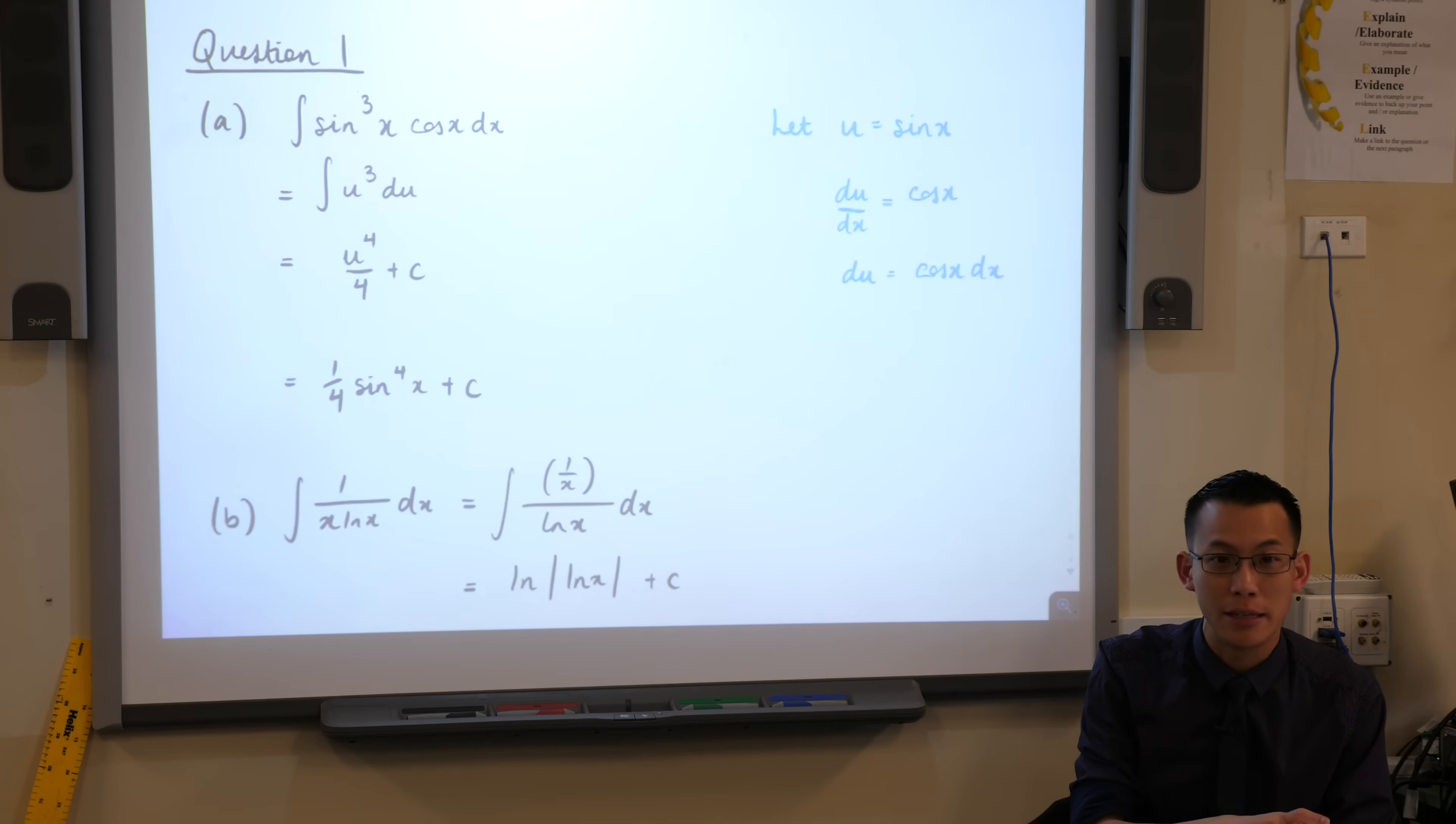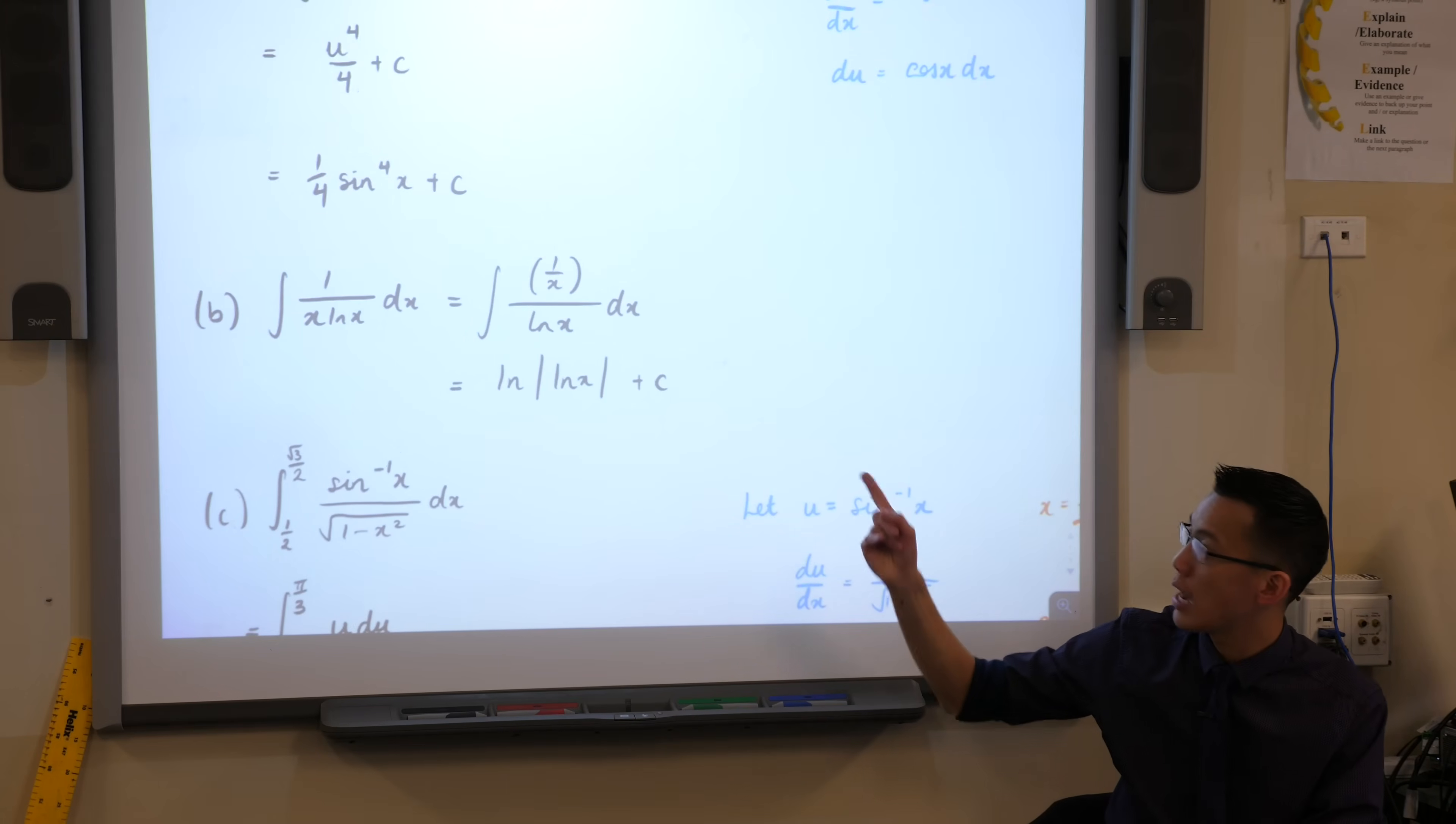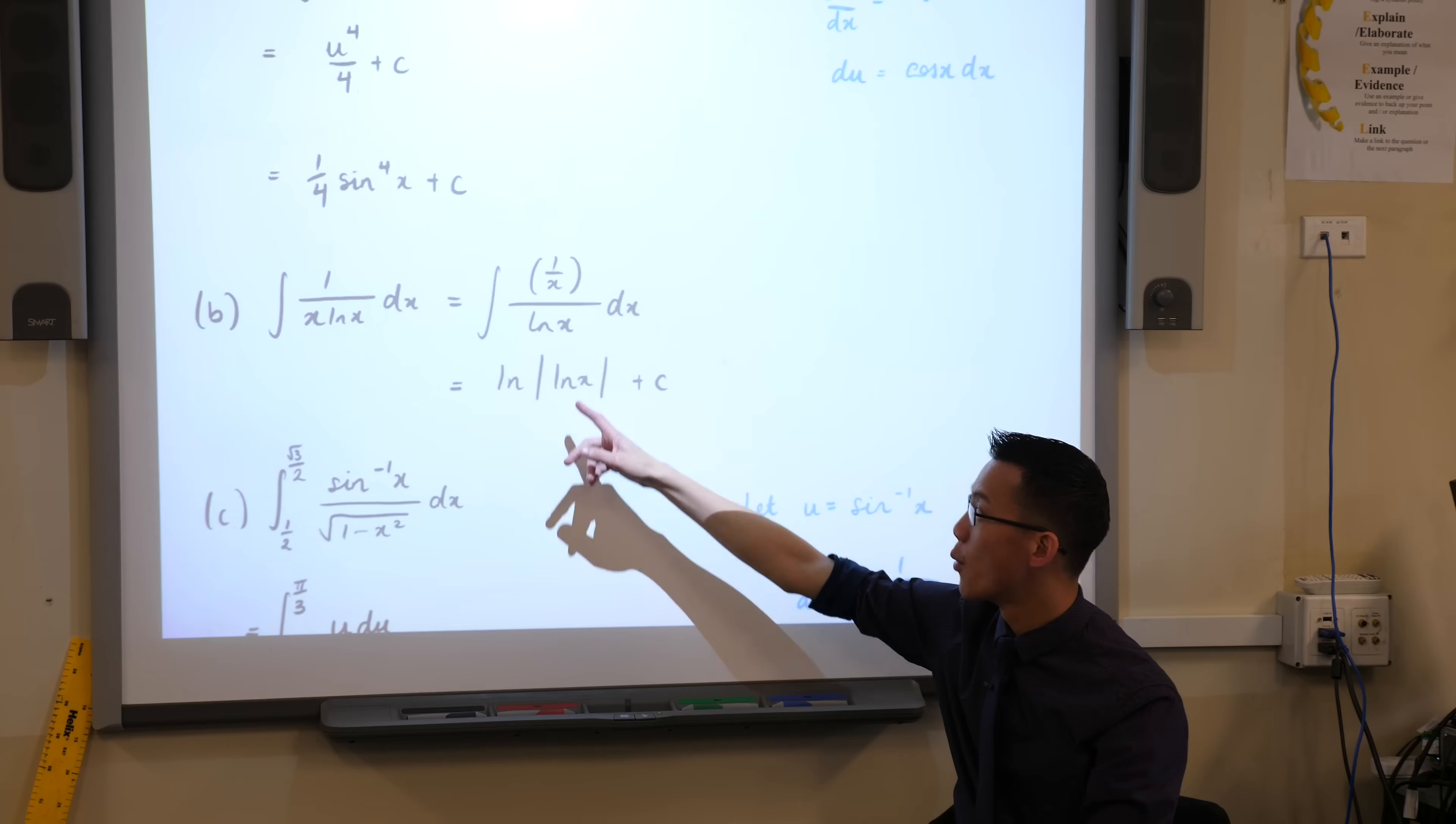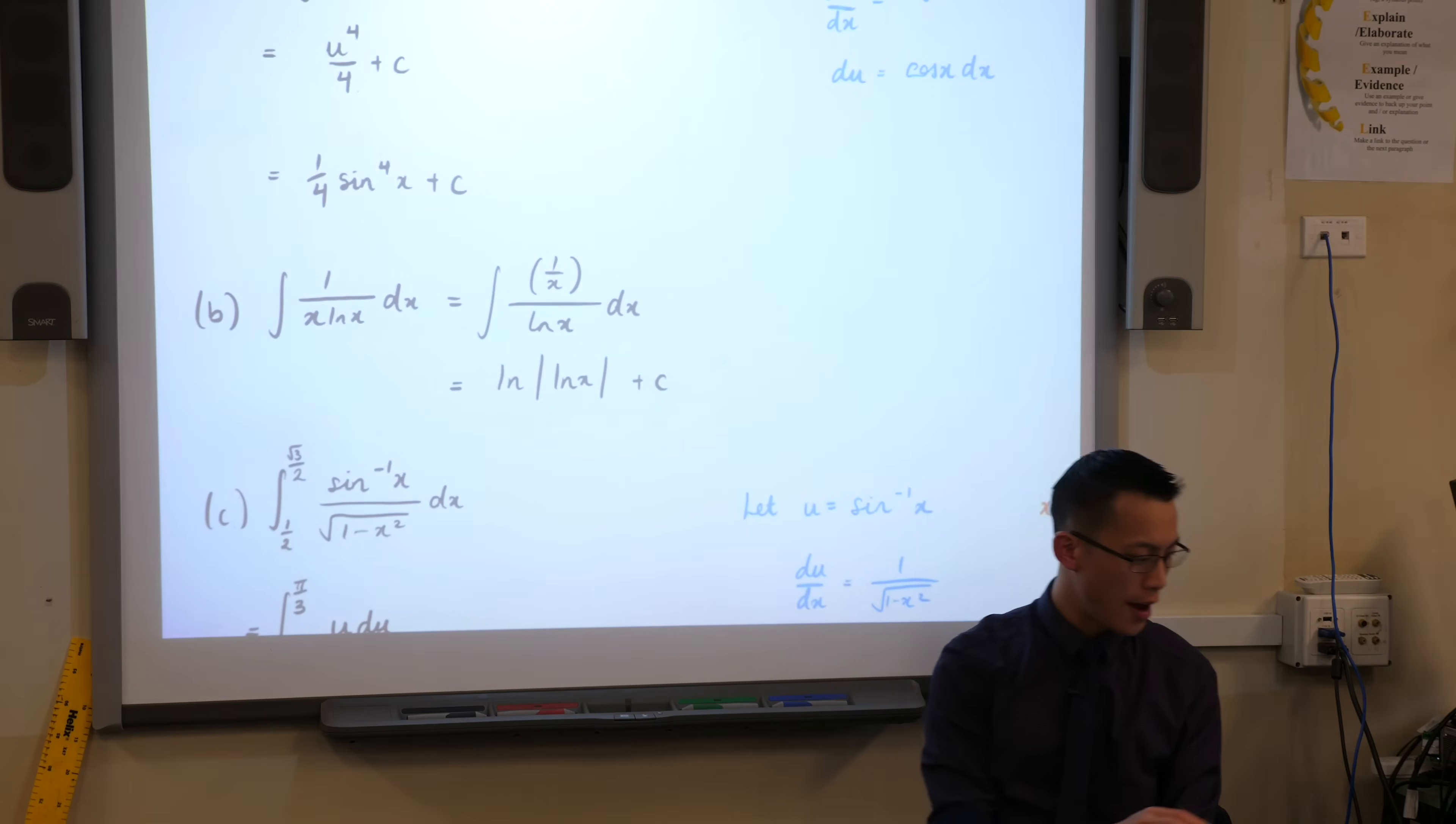In fact, I thought part B was extremely generous, because extension 1 students, I reckon I should be able to hand you that question without a substitution and you'd be able to work it out. Because if you have a look, this is in the form, once you do a slight rearrangement to it, this is in the form F dash on F. Two unit students, as two unit students we know what the derivative of log is, that's F dash on F, so we ought to be able to recognize that one by now. But we were really handing that to you, we really want you to get that question. So parts A and B were fine.